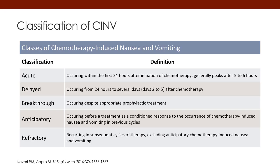Let's talk about the classification of chemotherapy-induced nausea and vomiting. Acute nausea and vomiting is that nausea and vomiting that occurs within the first 24 hours after chemotherapy has been administered. Delayed nausea and vomiting would start the second day — days two through five plus — anything after that first 24-hour period.